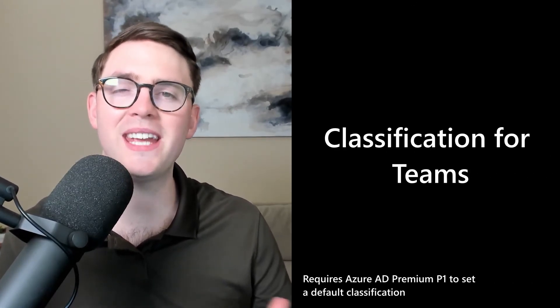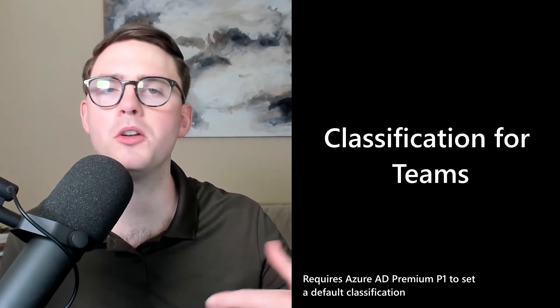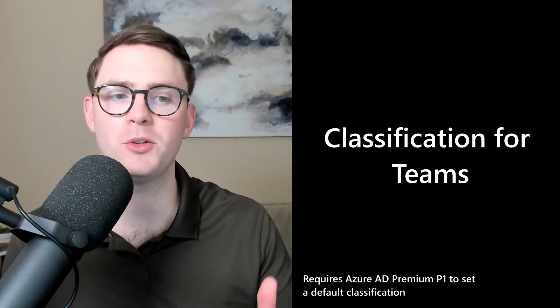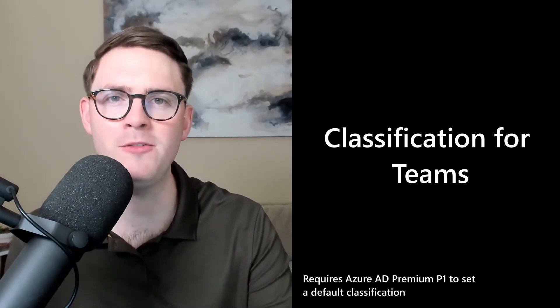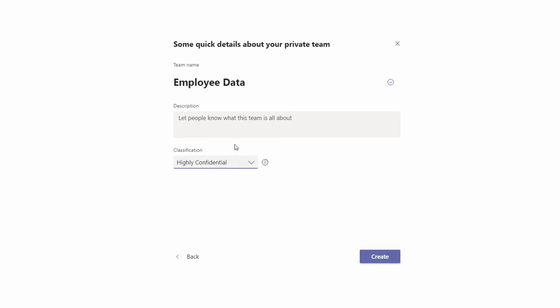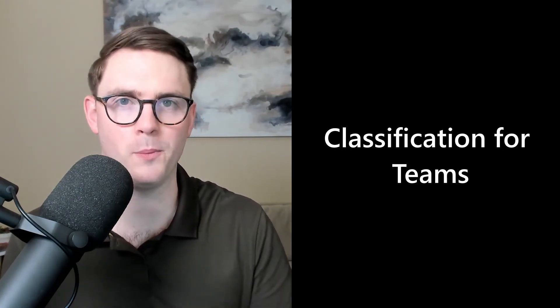Last up, we have data security. I want to give you a couple of things to think about in Microsoft Teams. First is being able to put classifications on your team. This allows someone creating a new team to say, okay, this team is highly confidential, confidential, or general — you can make up your own taxonomy. What this allows you to do is put specific settings and behaviors on those teams. For example, an HR group creating a team for sensitive employee data will want to mark it as highly confidential, and that can stop them from adding external guests. So think about the taxonomy and how it can play in your environment.